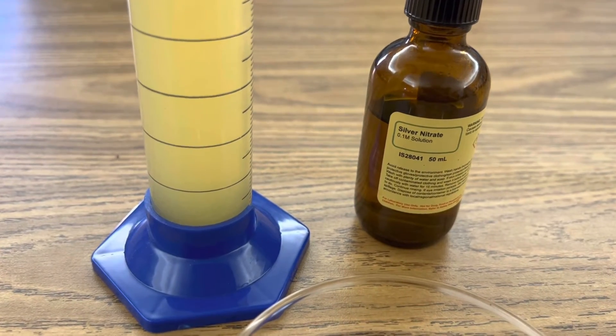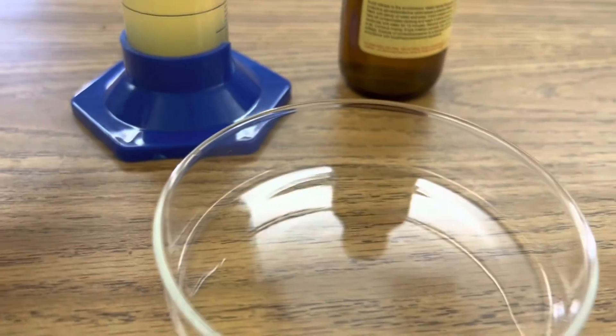Once your solution of iron sulfate is aqueous, add a little bit to your petri dish.